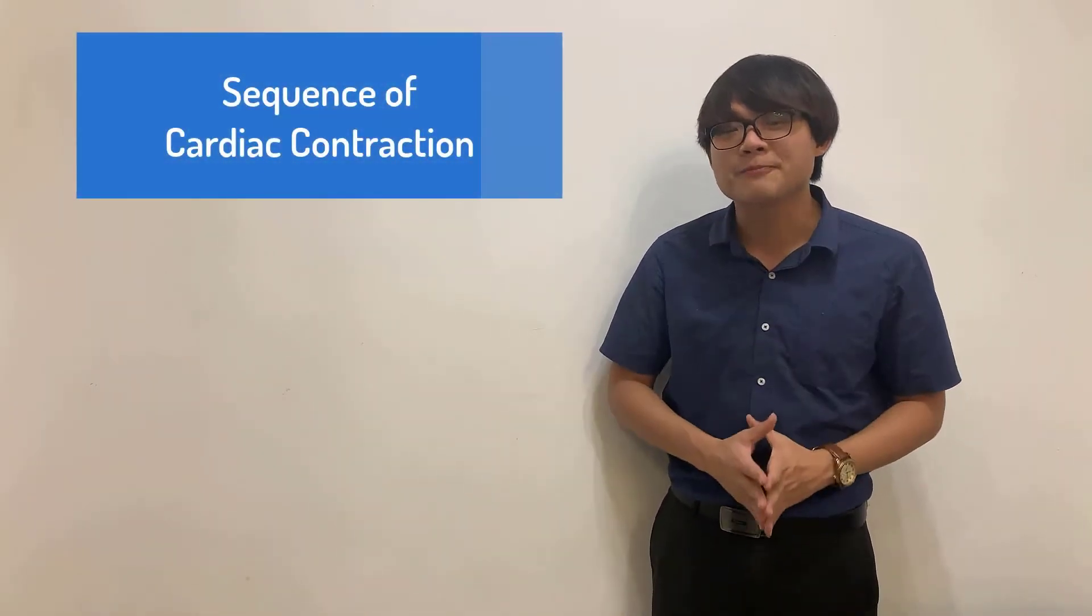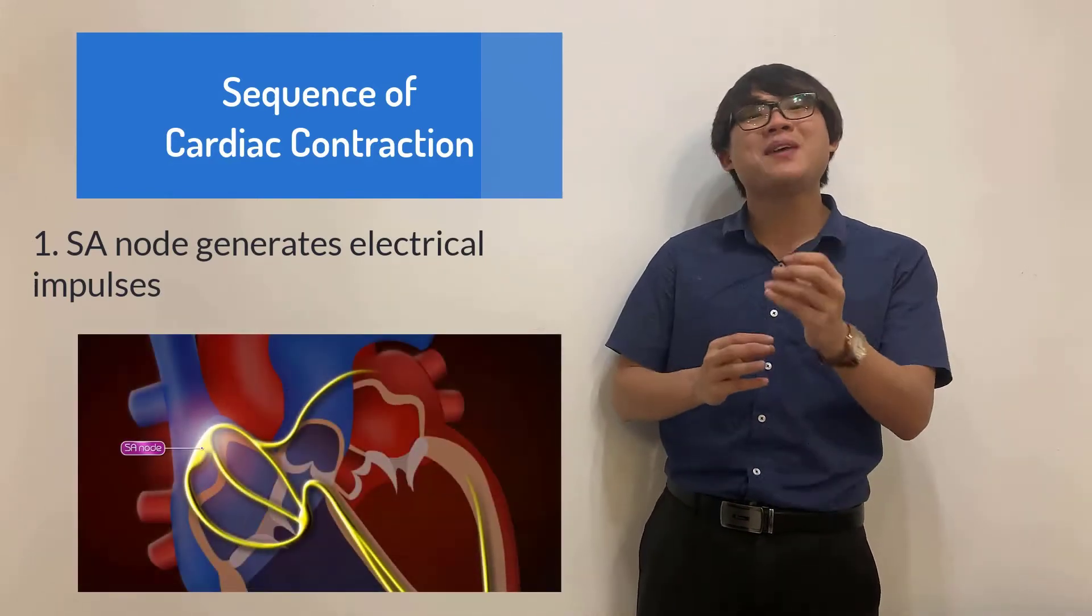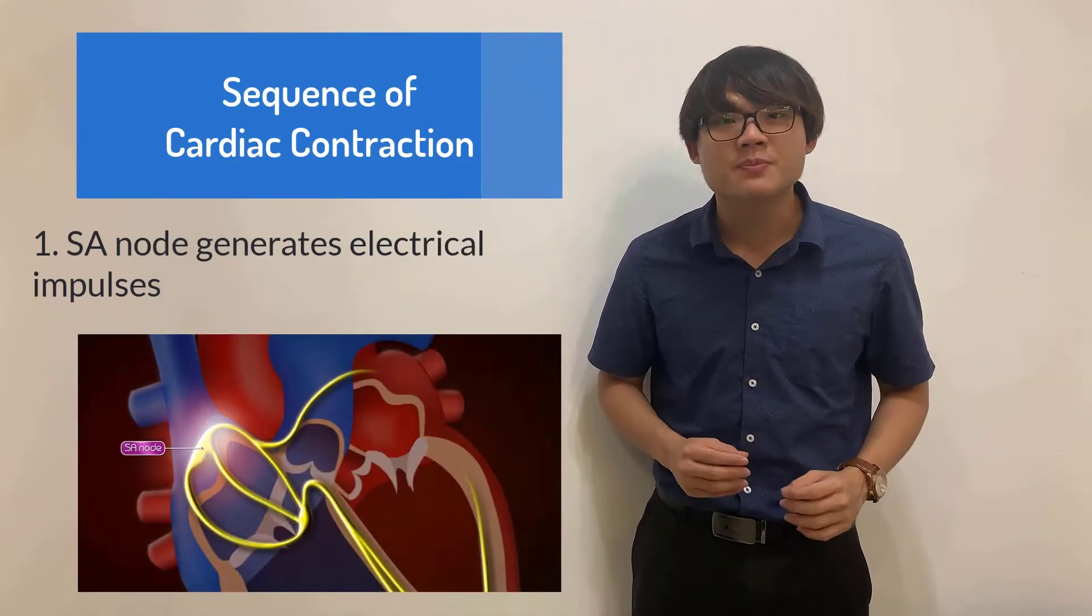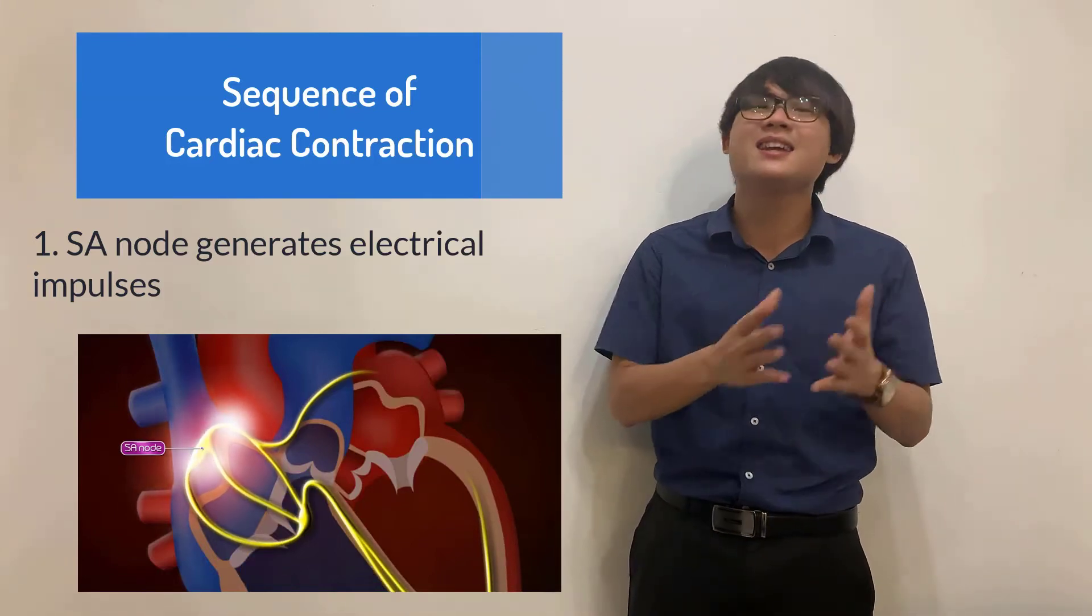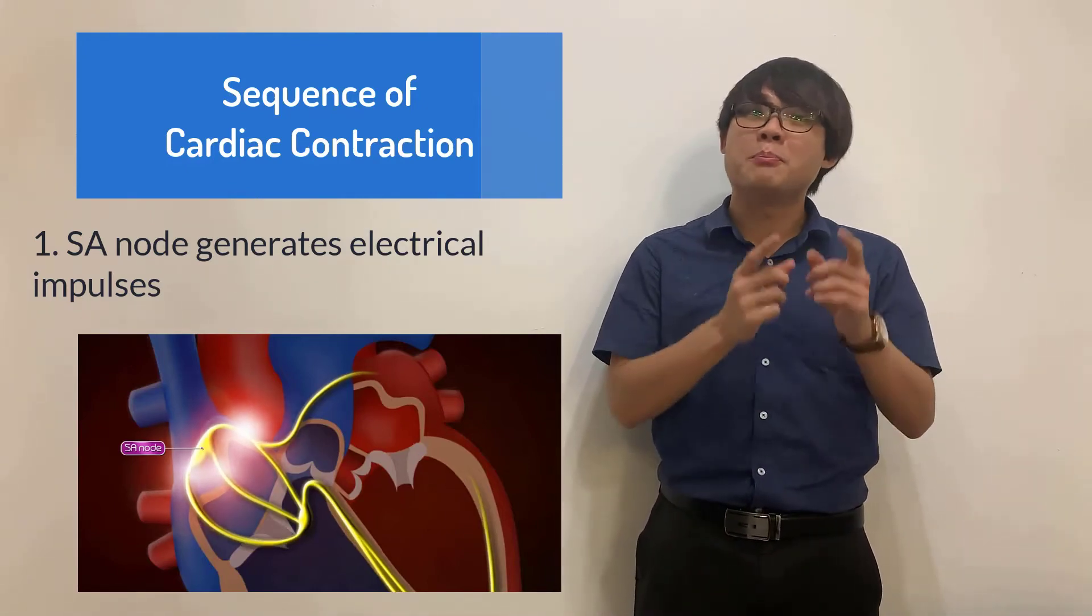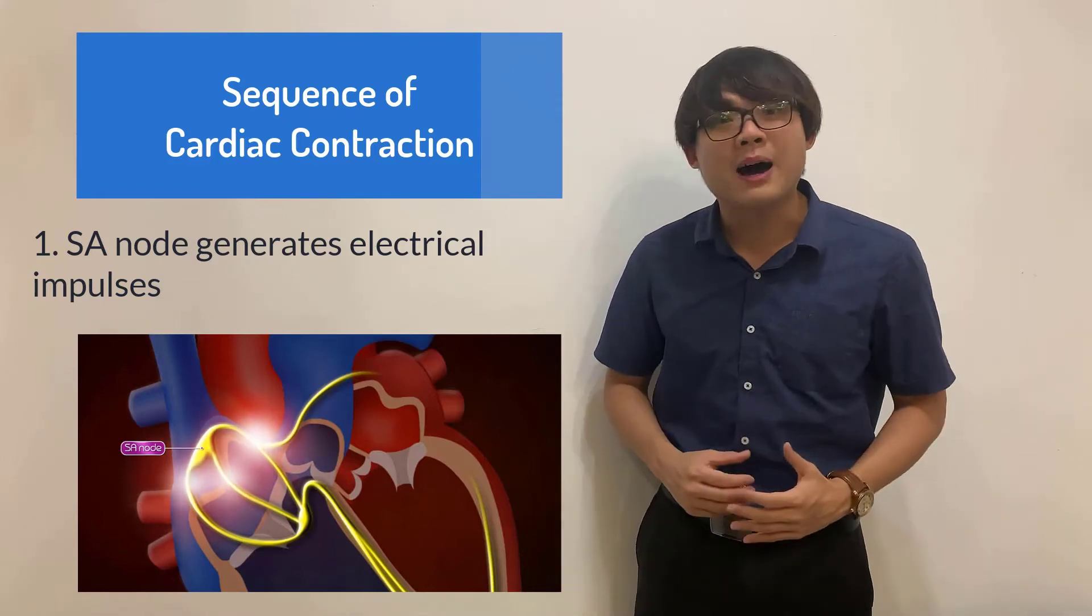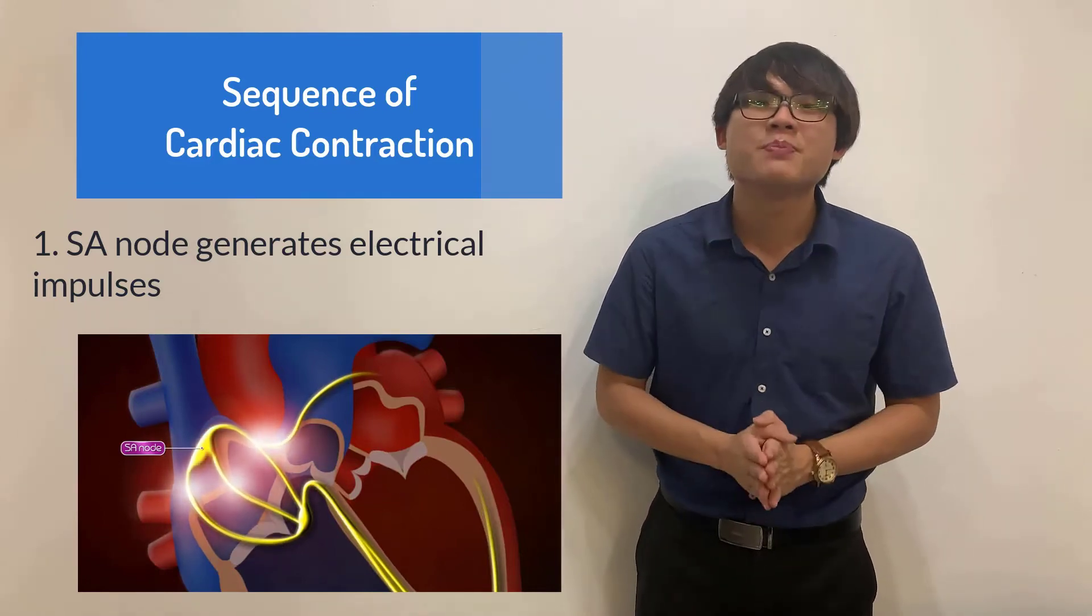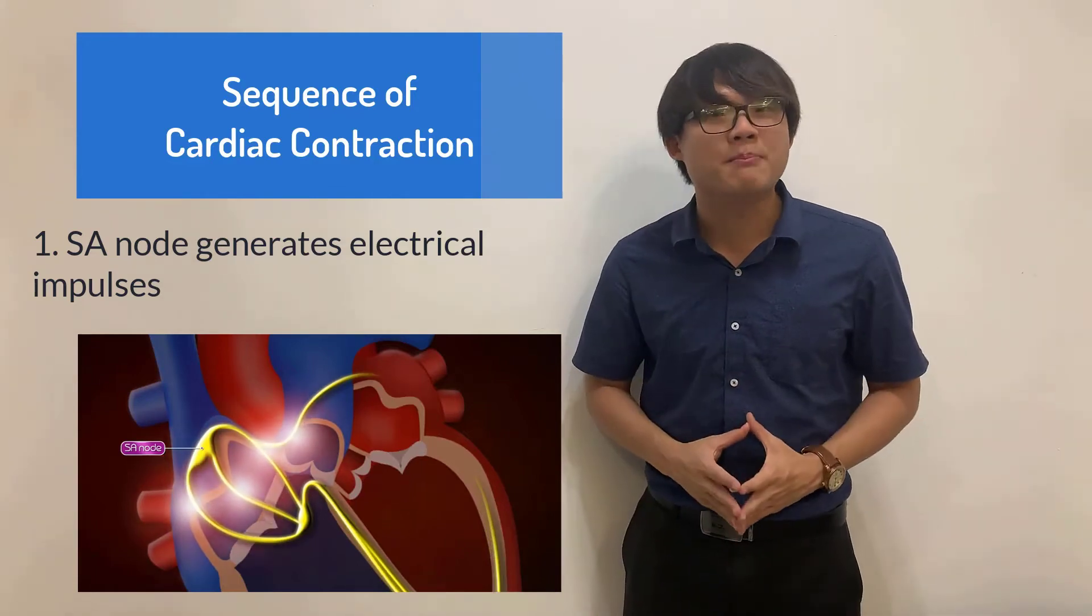So let's get started to talk about the process of electrical transmission in the heart. First of all, the sinoatrial node will generate electrical impulses. Be careful, we will never say nerve impulses because nerve impulses technically is coming from the nervous system, but the heart is part of the blood circulatory system. So instead of nerve impulse, we'll be talking about electrical impulse. The sinoatrial node will generate electrical impulses.